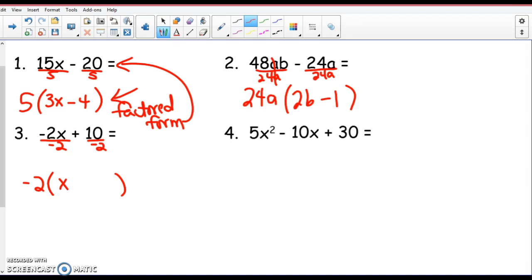What is positive 10 divided by negative 2? Negative 5. Now if I use distributive property here, would I end up with what I started? Negative 2 times positive x is negative 2x. Negative 2 times negative 5 is positive 10. Yes. Now that is one way to factor.